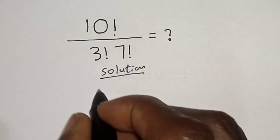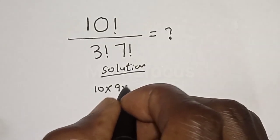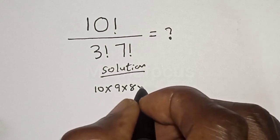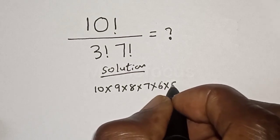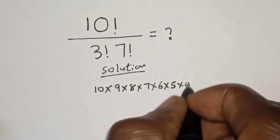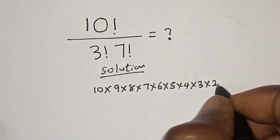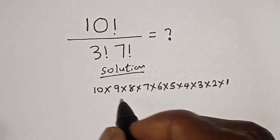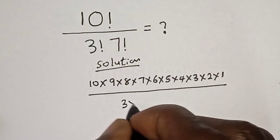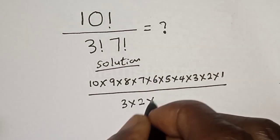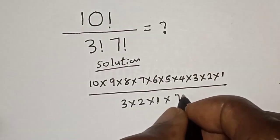10 factorial can be expressed as 10 times 9, times 8, times 7, times 6, times 5, times 4, times 3, times 2, times 1, then over 3 factorial which is 3 times 2, times 1, times 7 factorial.